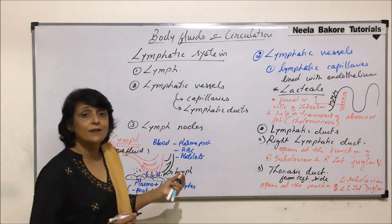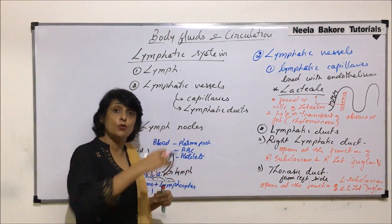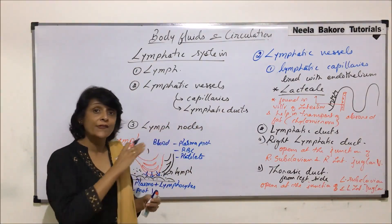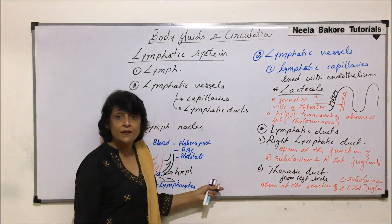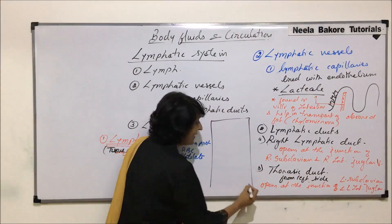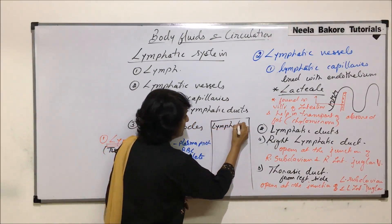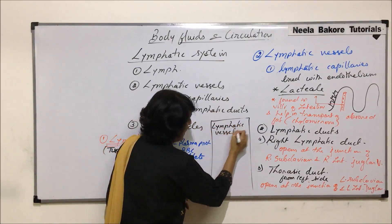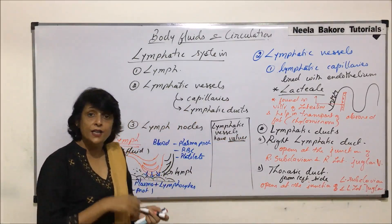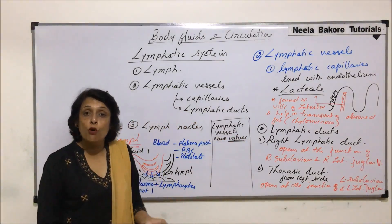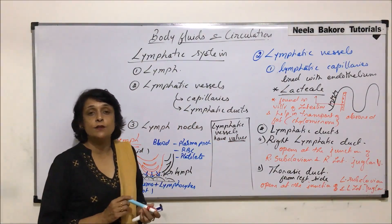As we talk about the vessels, we need to understand that basically they are acting as veins — taking fluid from the tissue to the main circulation or closer to the heart. So do they have similarities with veins? The similarity is that they have valves, like veins have. But here the number of valves is much more compared to veins, and because of this the lymphatic vessels appear beaded.